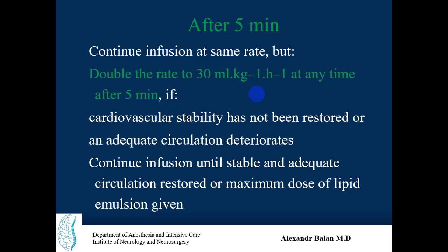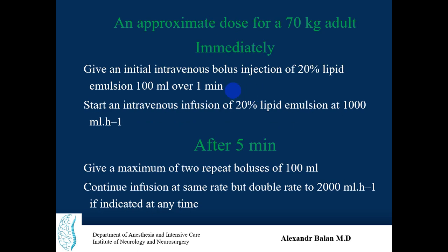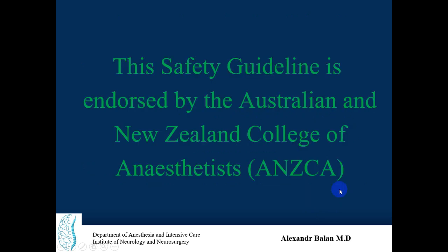Continue infusion until the patient is stable and circulation is restored. The approximate doses for a 70 kg patient: start 20% lipid emulsion at 100 milliliters per hour immediately, then after five minutes increase to a rate of 2000 milliliters per hour. This is taken from a safety guideline endorsed by the Australian and New Zealand College of Anaesthetists. Thank you very much.